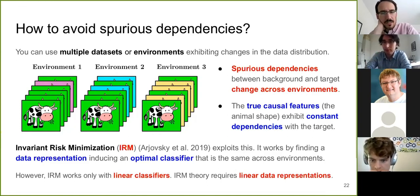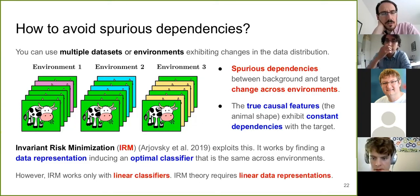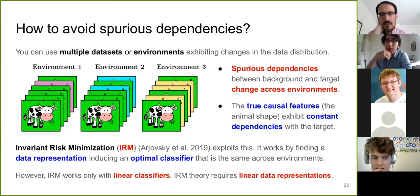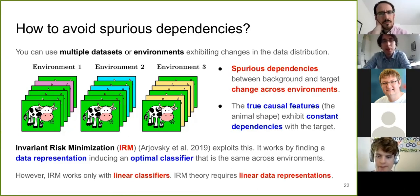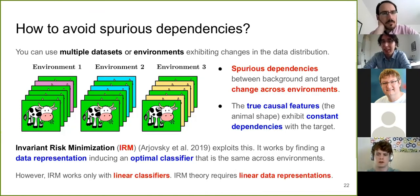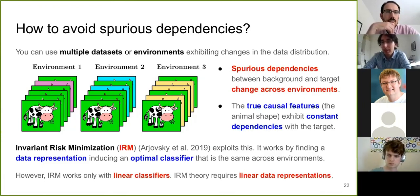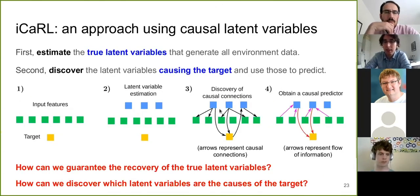Question: How does this compare with methods from probabilistic graphical models and Bayesian networks for inferring causal graphs? You could try to do causal discovery of relationships between variables. One key difference is that the variables here are latent — so first you need methods to estimate the latent variables, and for that you need the identifiability results.